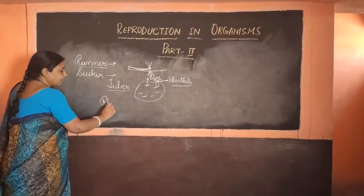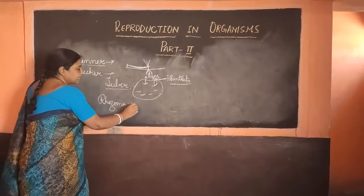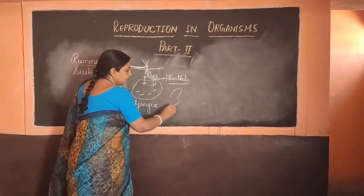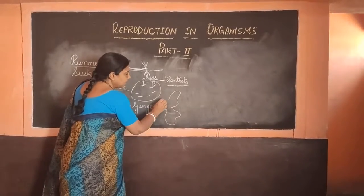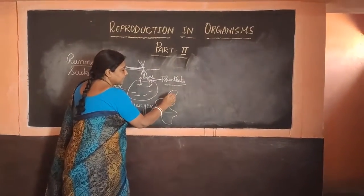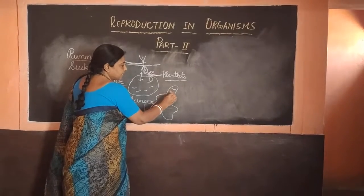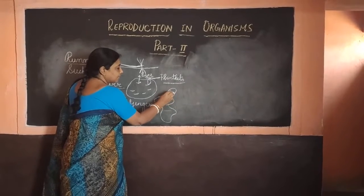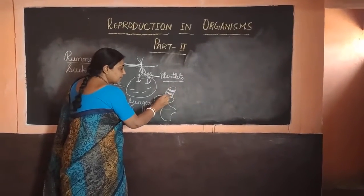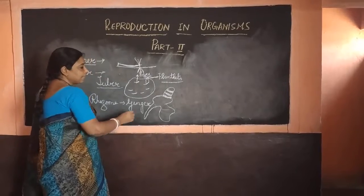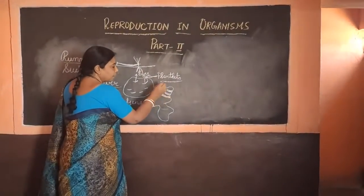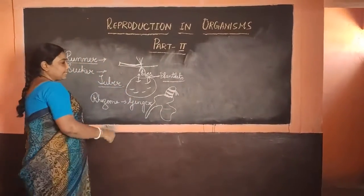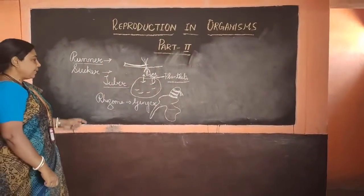Now take the case of rhizome — here the example is ginger, which all of you must have seen at home. You will see certain marks on the ginger; these marks represent the nodes. This is also a modification of the stem — an underground modification — and from these nodes, you will see new plants arising.